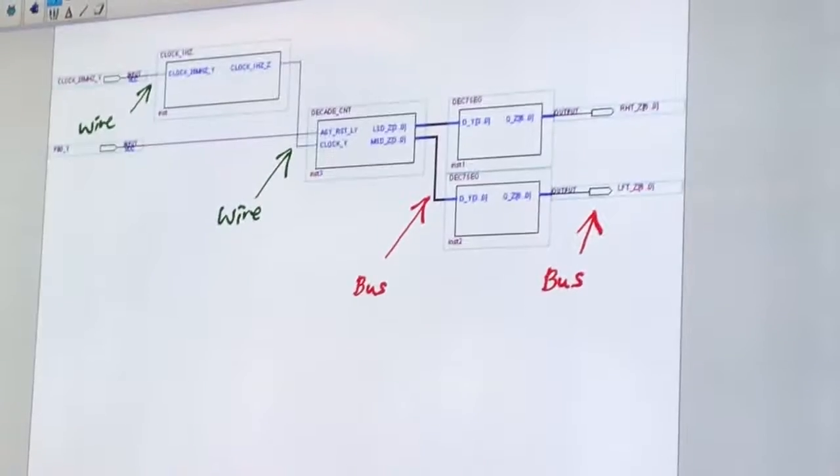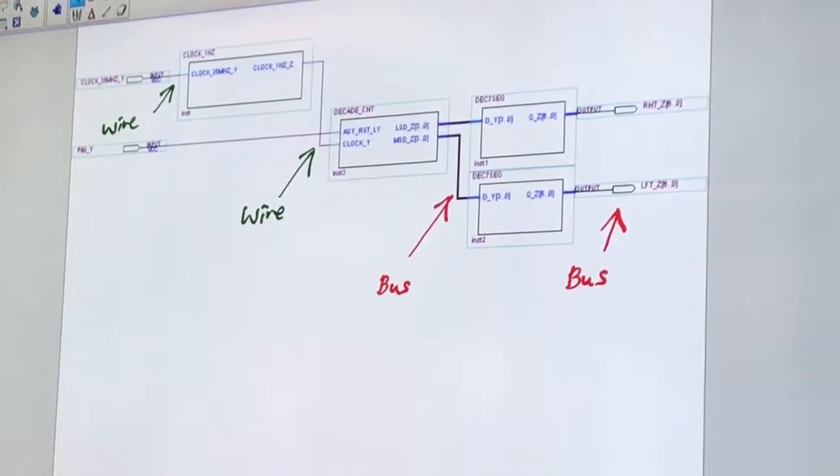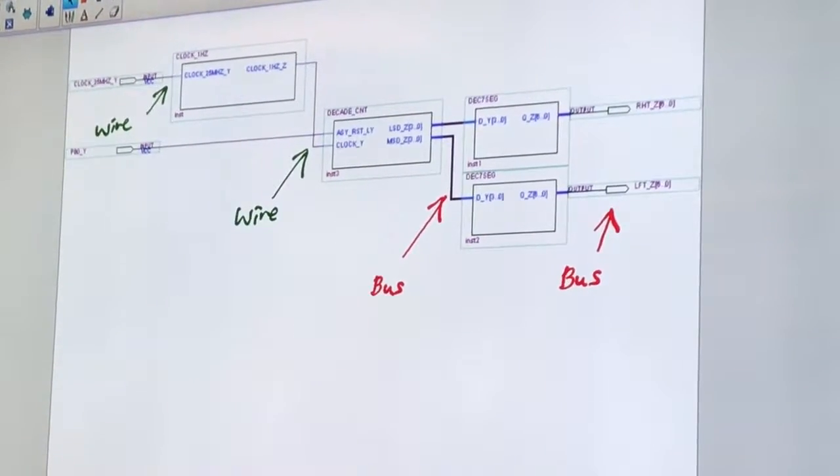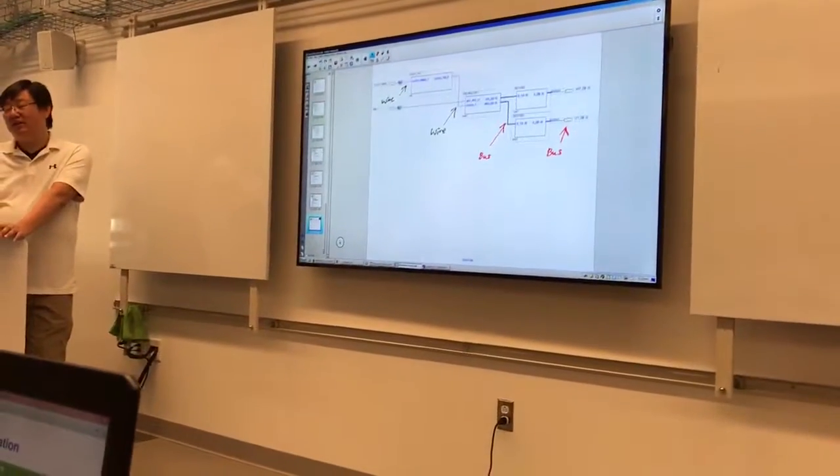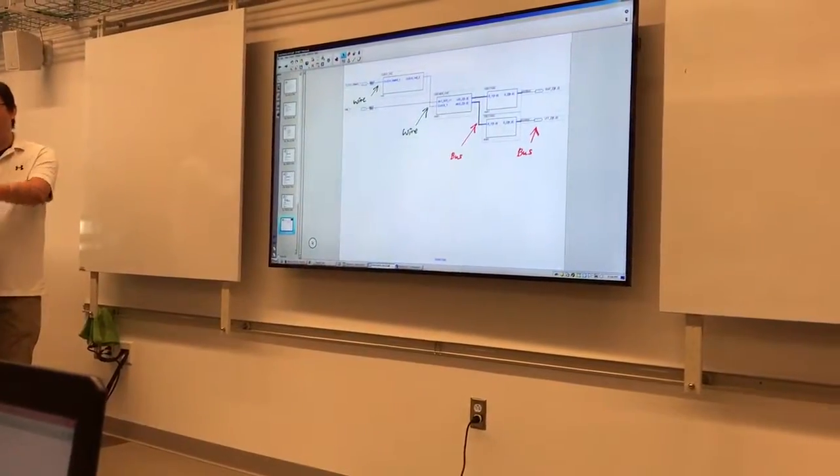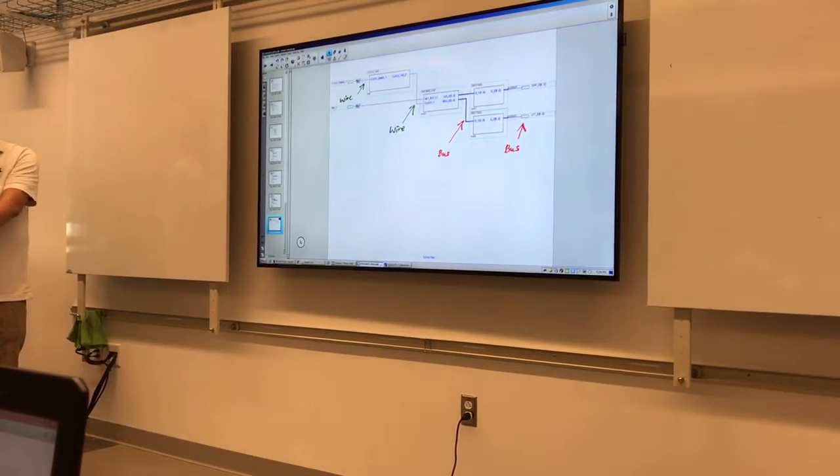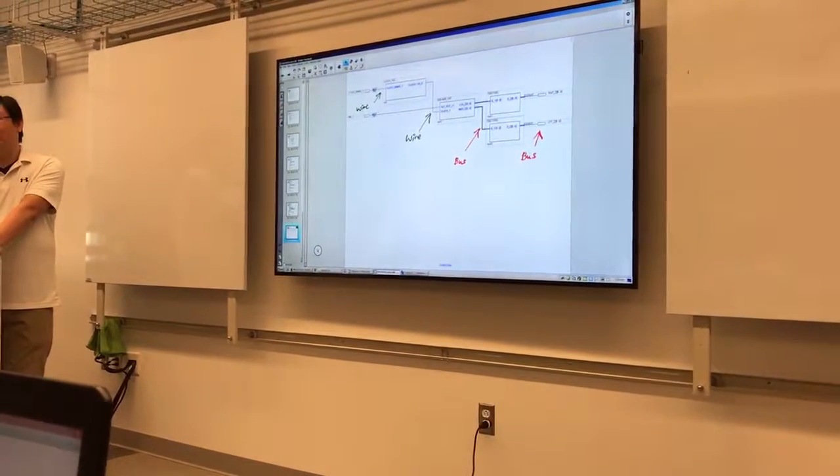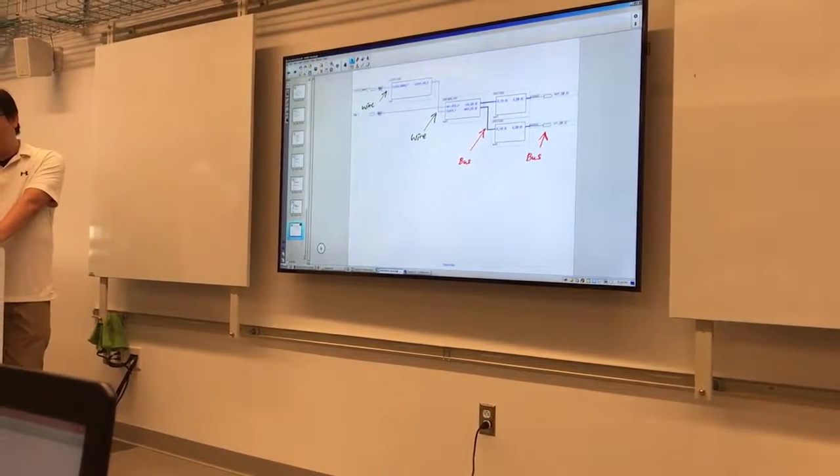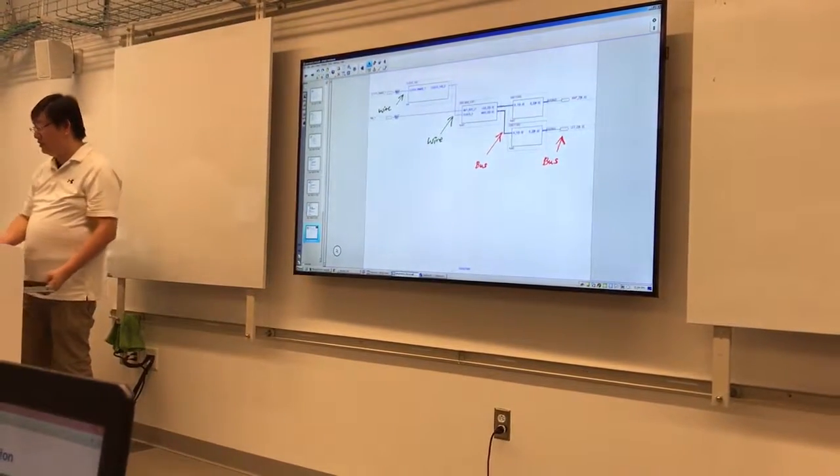You have done most of this already. If you have done assignment 2, you just use that, you change the name, you change the output name, and then you get it done. If you have done the 100 Hz, you can easily make it 1 Hz. So you need to spend time, most of it, on the counter time. Make sure that the counting sequence is correct.